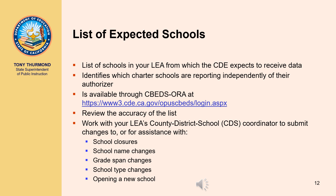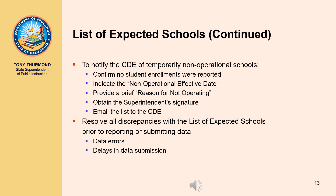If you find discrepancies with the list, work with your LEA's county district school CDS coordinator to submit changes for school closures, school name changes, grade span changes, school type changes, or opening a new school. If you have a school with no enrollment on information day, use the list of expected schools to notify the CDE of a temporarily non-operational school by contacting your LEA's CalPADS administrator to confirm no student enrollments were reported on the CalPADS ODS report 1.1 on information day, and indicate the non-operational effective date with a brief reason.